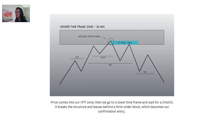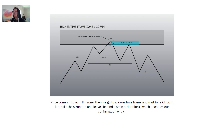Here's a quick summary. We look for displacements — break of structure with change in character on the higher time frame. We mark out the higher time frame order block on the 30-minute. When price comes into our higher time frame zone, we go to a lower time frame and wait for a change of character. It breaks the structure and leaves behind a five-minute order block, which becomes our confirmation entry. Price taps in, mitigates, breaks structure, change of character. We'll usually see displacement and imbalances. We mark out the zone — usually an indecision candle or the last bullish candle before the bearish drop — wait for price to tap into that zone, and this becomes our confirmation entry.